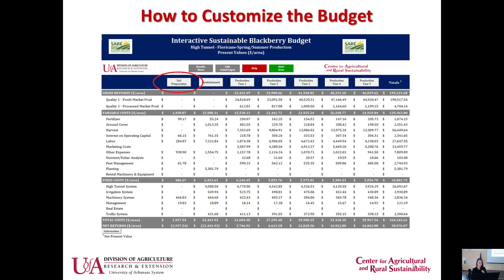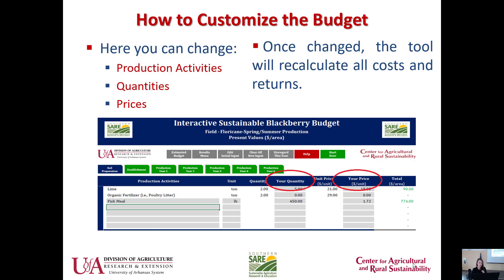When you click on the soil preparation button, you can add different costs and put in your quantities and prices. If you know, for example, that fish meal or organic fertilizer doesn't cost that much for you, you can enter your actual cost and quantity. You can really go in and customize this — it just gives you a starting point. Once you change anything in these budgets, it'll automatically update across the different graphs and throughout the entire budget.